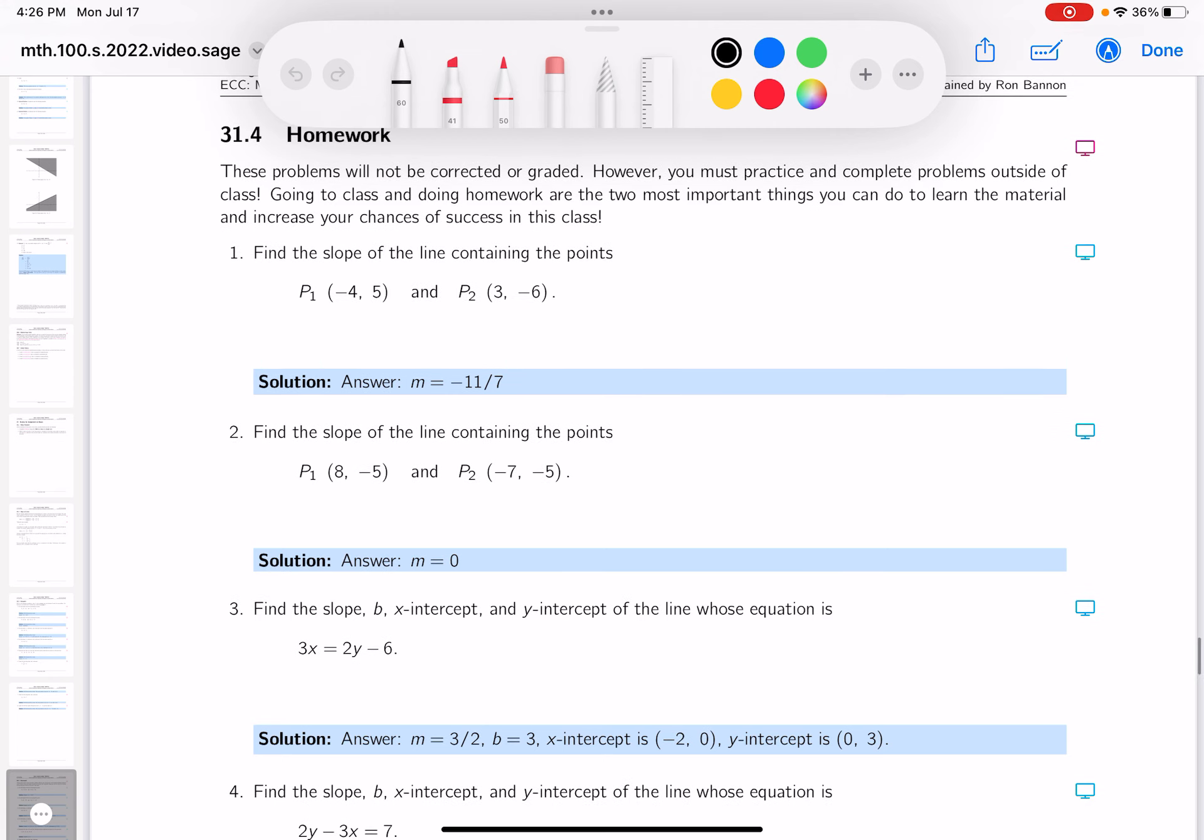Let's just review slope for you. The slope, m, is delta y over delta x. We often write this as y2 minus y1 over x2 minus x1.